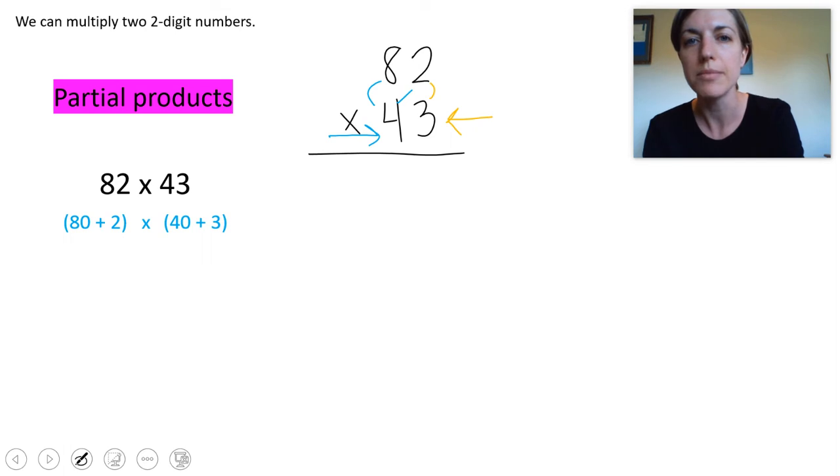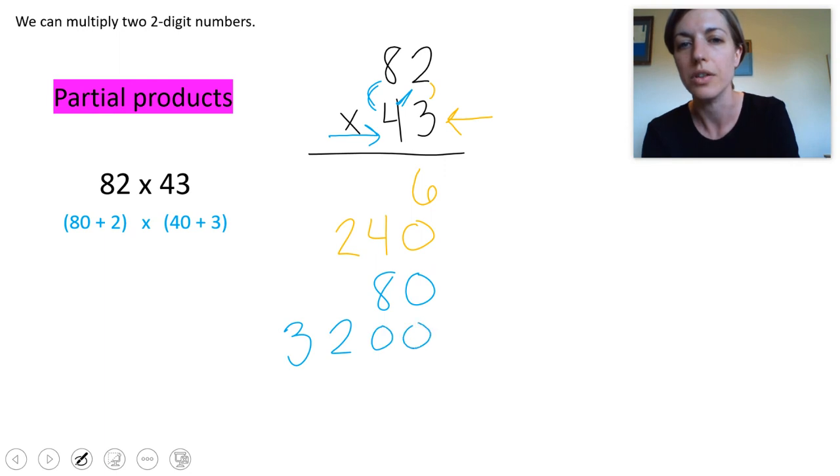We're going to do 3 times 2 which is 6. And then 3 times 8 tens or 80 which is 240 or 24 tens. Then let's go over to the tens place and do 40 times 2 which is 80. And then 40 times 80 which is 3200.